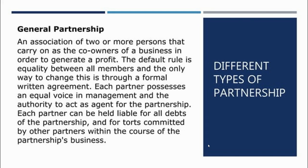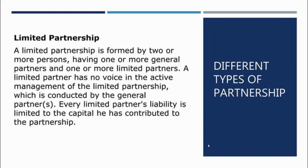A general partnership is an association of two or more persons who carry on as co-owners of a business in order to generate a profit. The default rule is equality between all members, established through a formal written agreement. A limited partnership is formed by two or more persons, having one or more general partners and one or more limited partners. Limited partners have no voice in the active management of the limited partnership, which is conducted by the general partners. Every limited partner's liability is limited to the capital they have contributed.